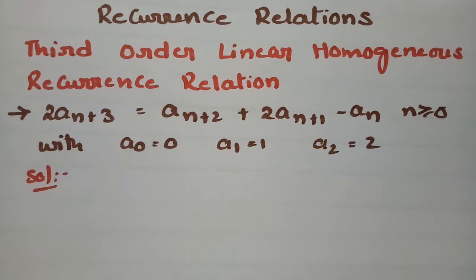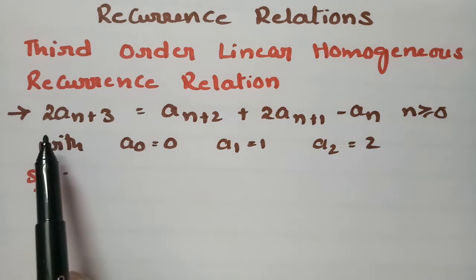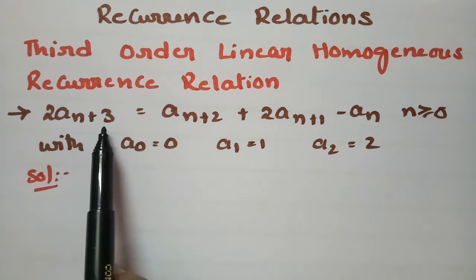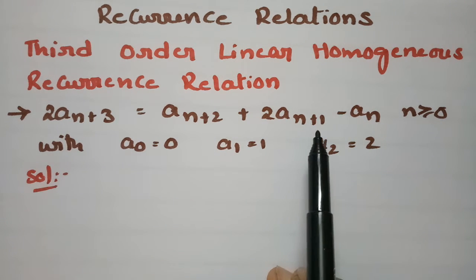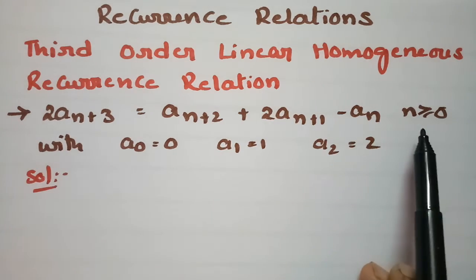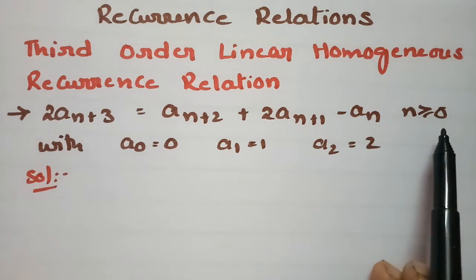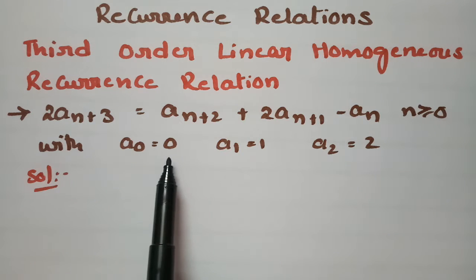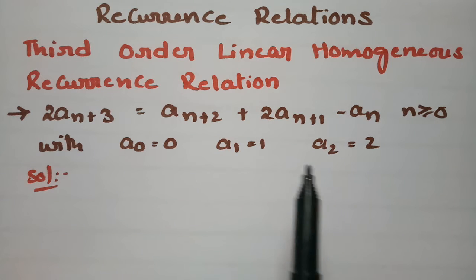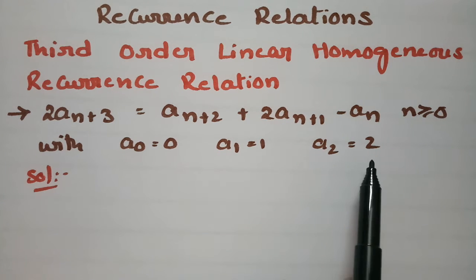Today's video I am going to give solutions for the third order linear homogeneous recurrence relations. This problem is related to discrete mathematics. We have to solve 2a(n+3) = a(n+2) + 2a(n+1) - a(n), where n is greater than or equal to 0, with initial conditions a₀ = 0, a₁ = 1, and a₂ = 2.